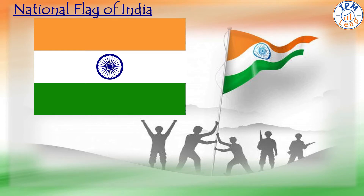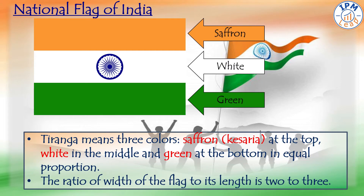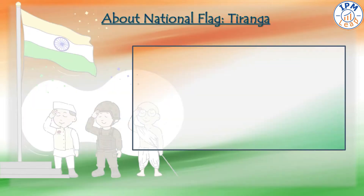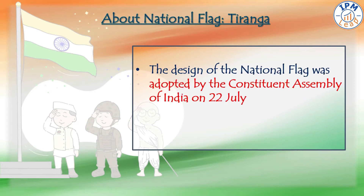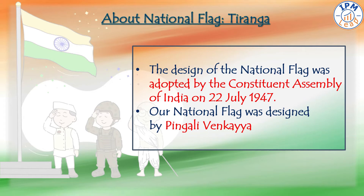Let's discuss the very first of these symbols — the national flag of India, which is also known as Tiranga. Tiranga means three colours: saffron or kesaria at the top, white in the middle, and green at the bottom in equal proportion. The ratio of width of the flag to its length is 2 is to 3. The design of the national flag was adopted by the Constituent Assembly of India on 22nd July 1947 and was designed by Pingli Venkaiya.